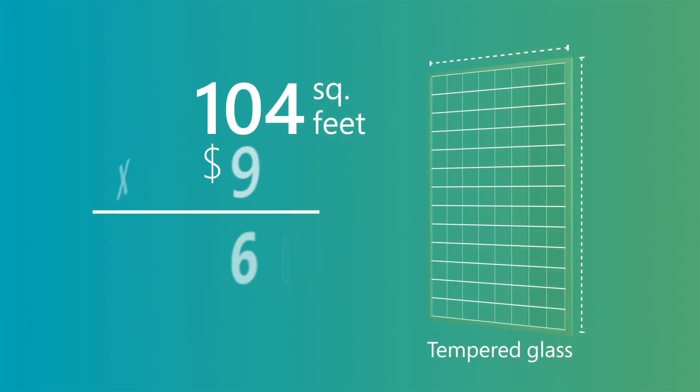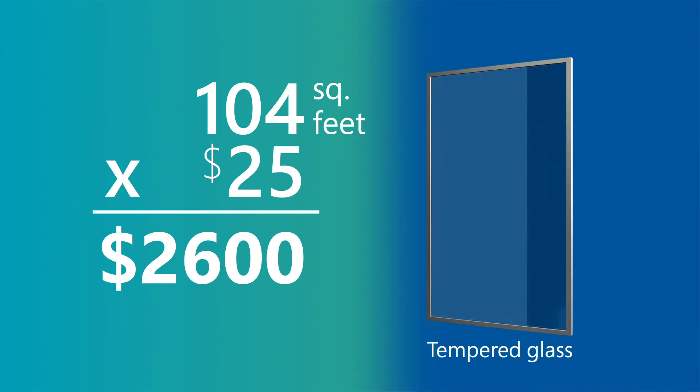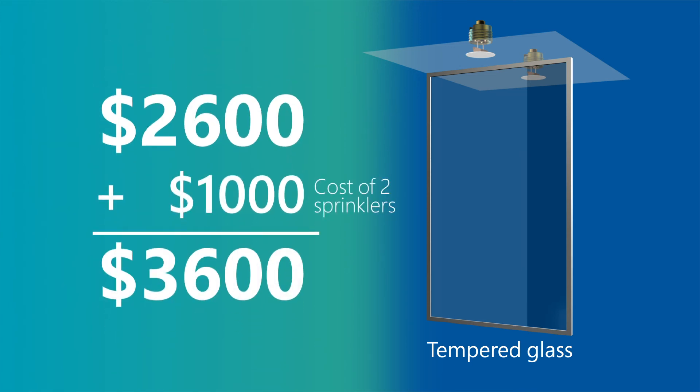As an alternative, if you use tempered glass, the average cost per square foot is $25 uninstalled. In addition, a window sprinkler is required on both sides of the glass and costs around $1,000 uninstalled. Therefore, the final price of a tempered glass window with two window sprinklers is $3,600.